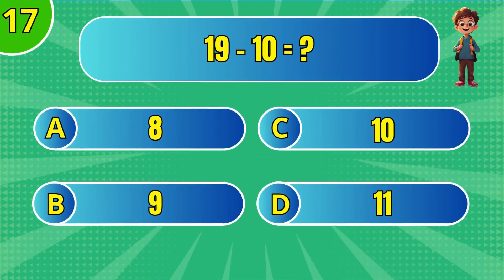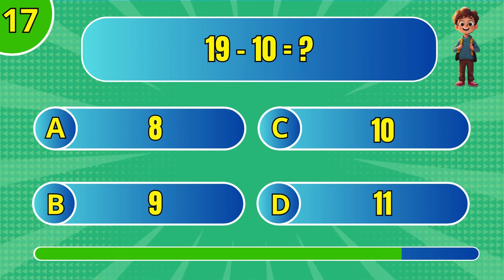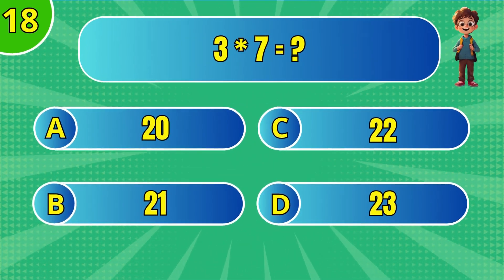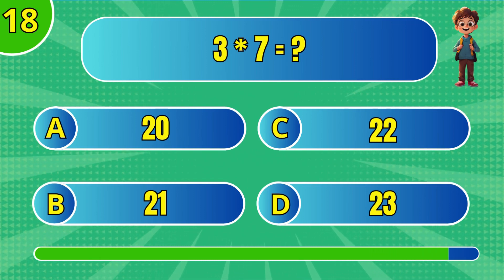What is 19 minus 10? B: 9. What is 3 multiplied by 7? B: 21.